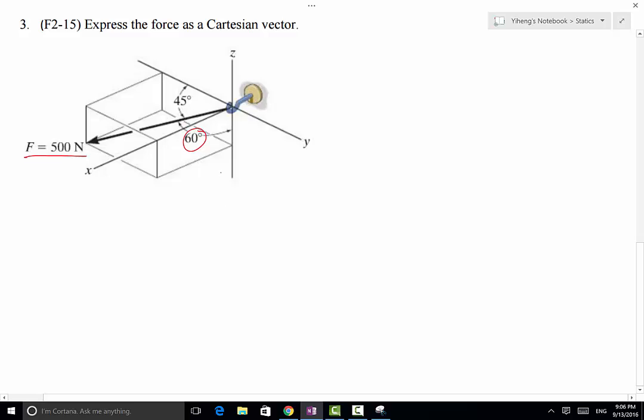the negative z direction, is 60 degrees. And we also know that this angle right here, which is made by this force with the negative y direction, is 45 degrees. So from this information we need to determine this force as a Cartesian vector.